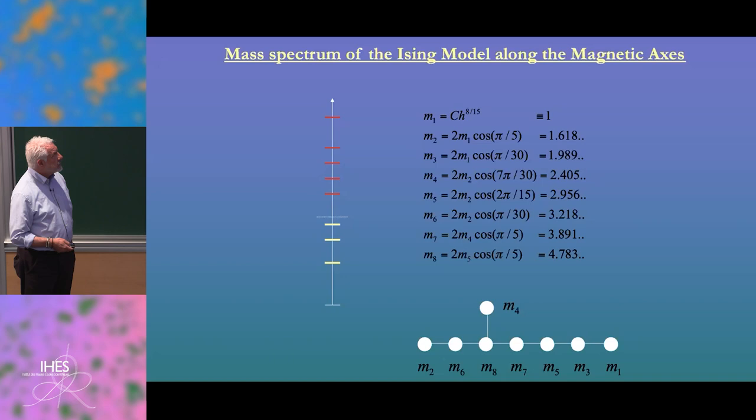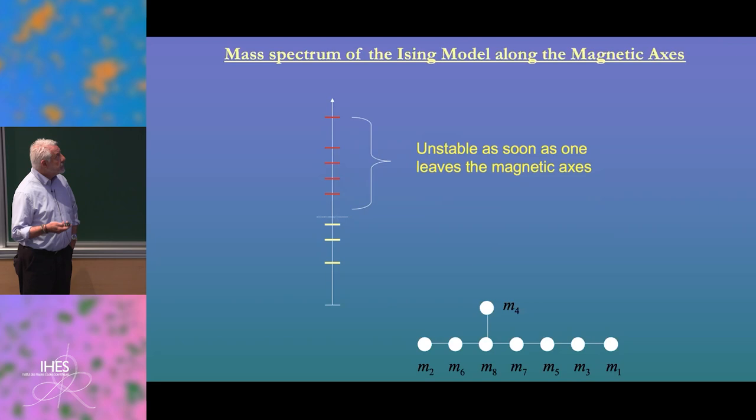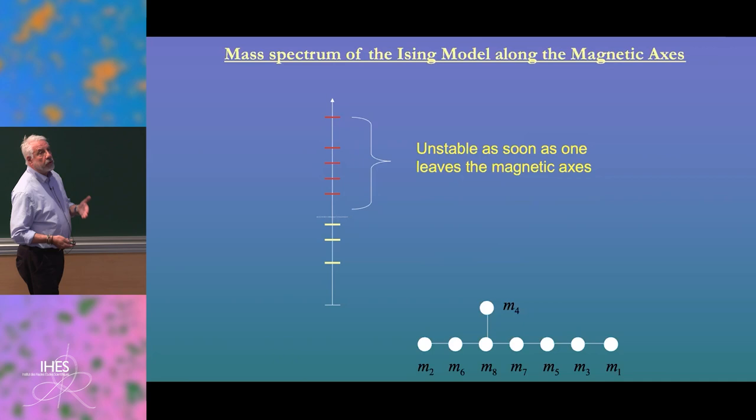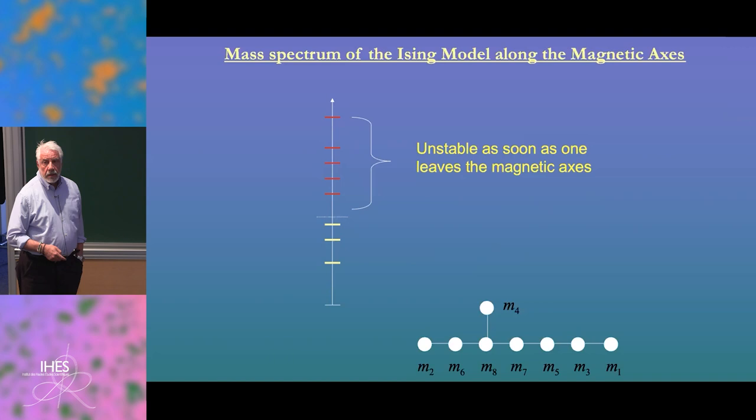This theory has a very peculiar feature: five of these excitations are above the continuum. Typically, you would not expect to see them in any experiment because they are hidden in the continuum contribution coming from the multiparticle states — in particular by the two-particle states of the lowest one. However, we will see that the story is more interesting than that.